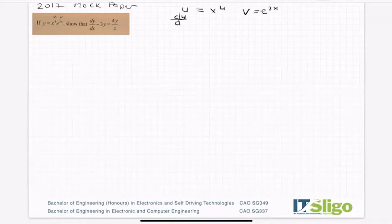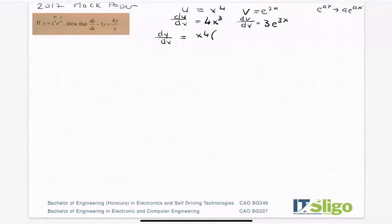So dy/dx is equal to take down the power, reduce the power by 1. For du/dx I'm using e to the ax to give me ae to the ax, so 3e to the 3x. It's a product, so dy/dx is equal to x to the power of 4 times dv/dx plus v times du/dx.